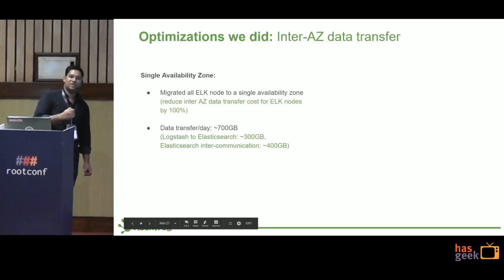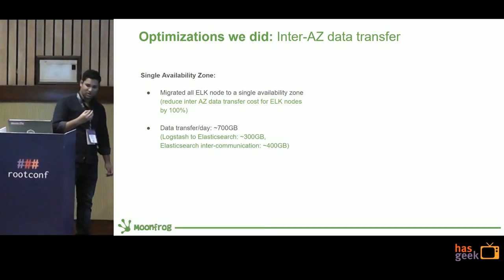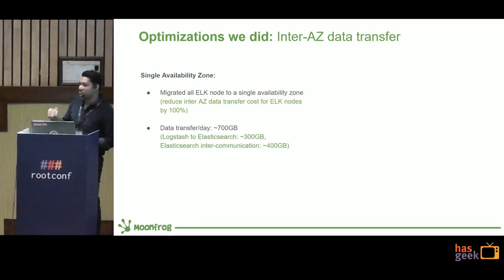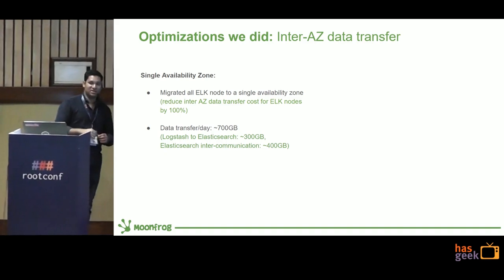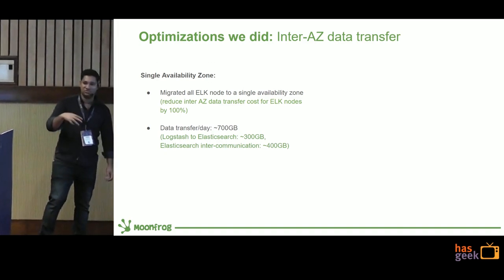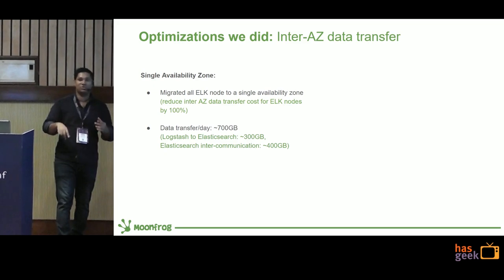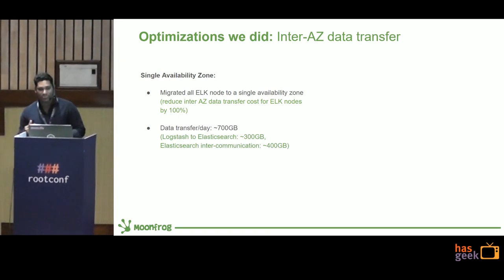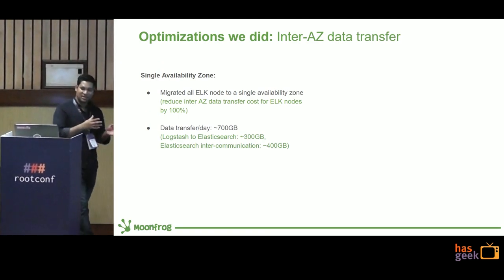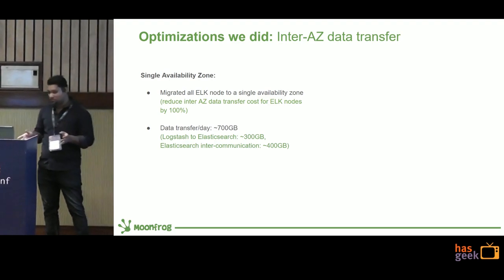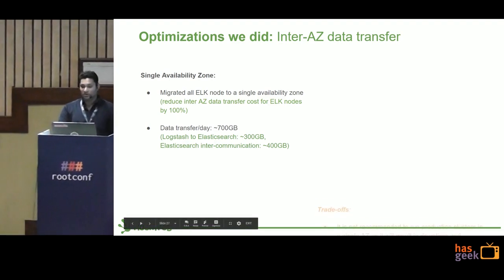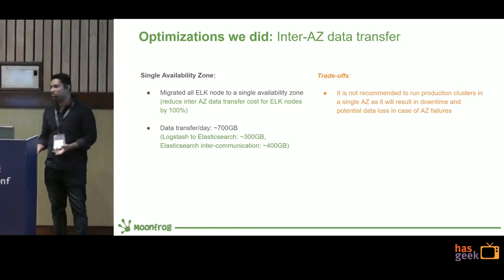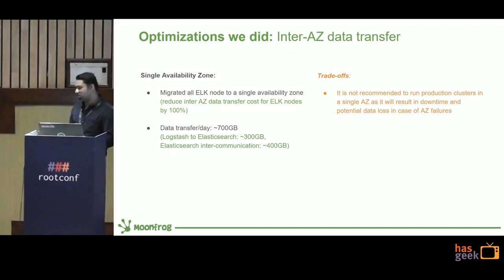The next optimization is intra-AZ data transfer. We found that per day there was about 700 GB of data transfer happening between ELK nodes — 300 GB for Logstash-to-Elasticsearch, and 400 GB for inter-Elasticsearch node communication. What we did was migrate all ELK nodes to a single availability zone. Of course there are trade-offs — AWS does not recommend running production infrastructure in a single AZ, because if your AZ goes down you could face potential data loss.